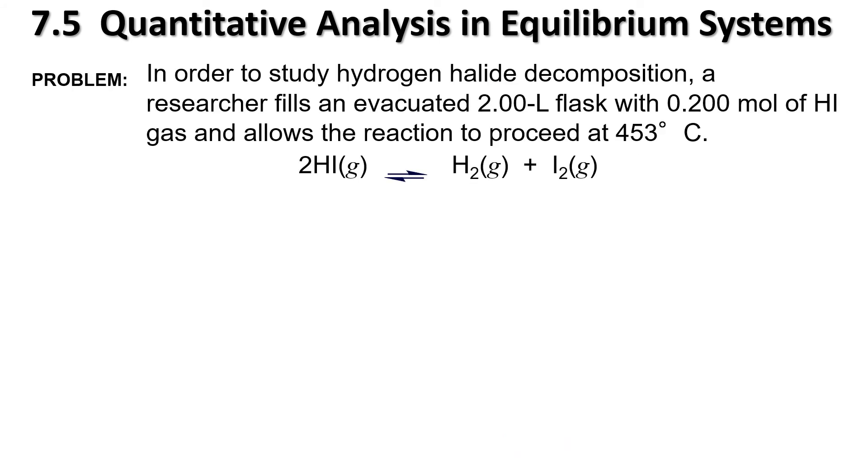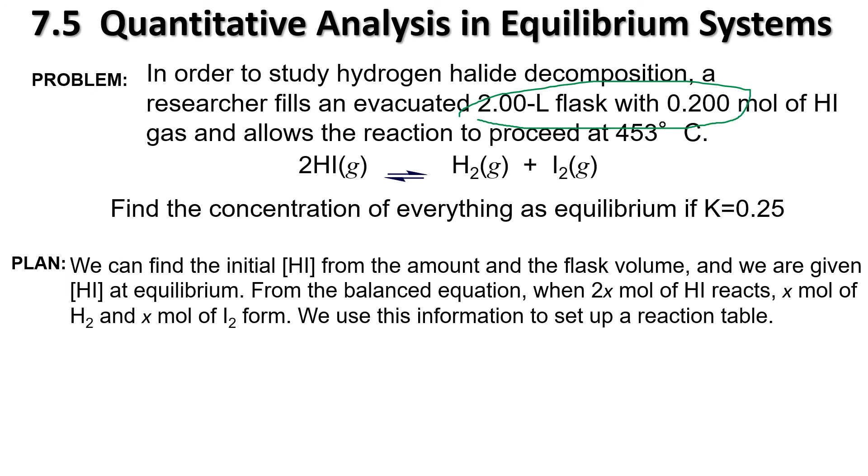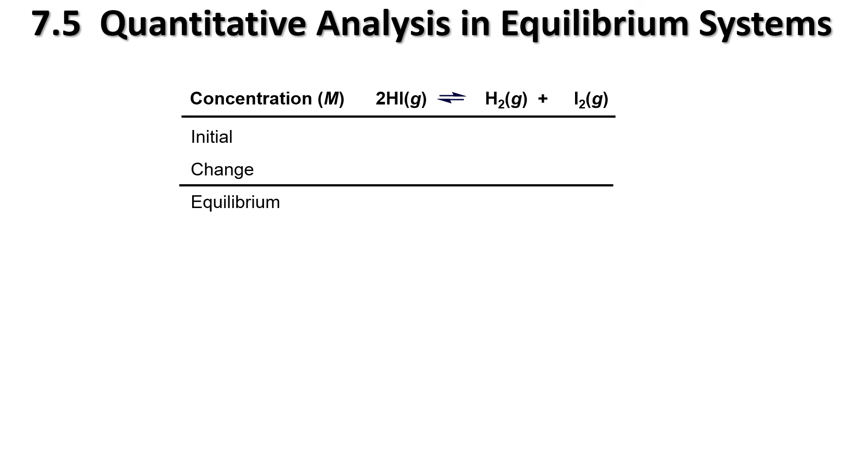Last one here, in order to study hydrogen halide decomposition, a researcher fills an evacuated 2.0 flask with 0.2 moles of HI gas and allows the reaction to proceed at 453 degrees Celsius, pretty warm. So, there's our balanced equation. We're going to find the concentration of everything at equilibrium if K is equal to 0.25. So, our plan is that we are going to repeat our problem. Well, the first thing we've got to do is we have to deal with the fact that we don't have a concentration, but we can simply come up with a concentration here, and that's going to be our first step. So, there is our concentration of the HI calculated at 0.1 molar. So, to reflect our changes there, we've got 0.1, and notice that we've got 0 for the two products, because this one has yet to proceed. And so, our changing is going to be based on our coefficients here. So, 2 and a 2. And of course, our products are forming. We don't need to do the K-Q comparison, because there are literally none to start with. So, it has to be forming here. So, that's why we've got our plus x's. So, there's our stuff.